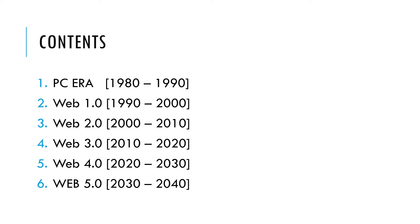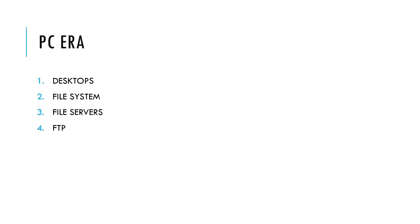The PC era starts from 1980 to 1990. Then the web world started: Web 1.0 is 1990 to 2000, Web 2.0 is 2000 to 2010, Web 3.0 is 2010 to 2020, Web 4.0 is 2020 to 2030, and Web 5.0 is 2030 to 2040. In the PC era we had desktops, file systems, file servers, and file transfer protocols.